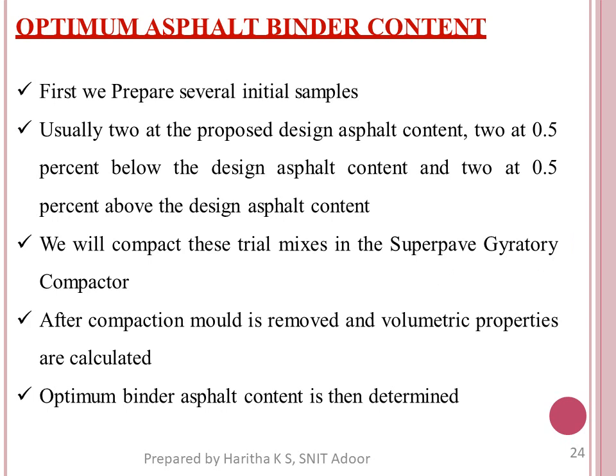The fourth element is Optimum Asphalt Binder Content Selection, which determines how samples are prepared. Usually, two samples are prepared at the proposed design content, two at 0.5% below the design content, and two at 0.5% above the design content. The SuperPave Gyratory Compactor is used, trial mixes are compacted, and the compacted specimens simulate field conditions. After removing from the mould, volumetric properties are measured.